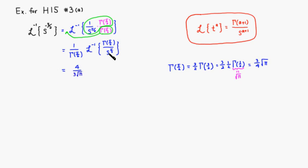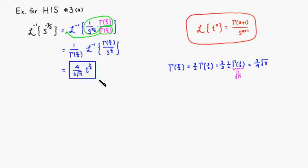So the inverse Laplace transform of s to the negative 5 halves is 4 over 3 square root of pi, times t to the 3 halves. That's the final answer — I hope that was clear.